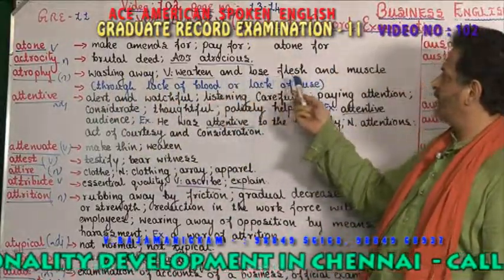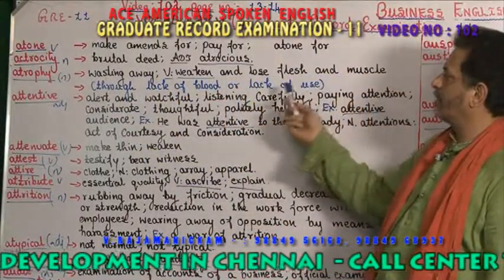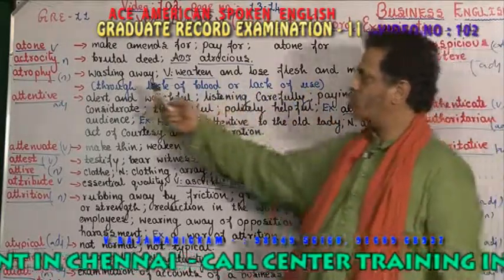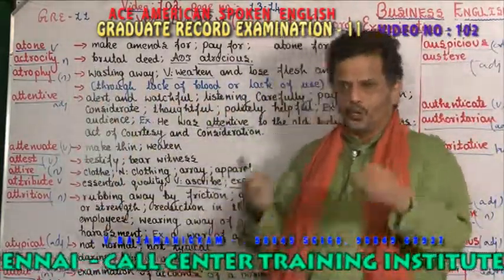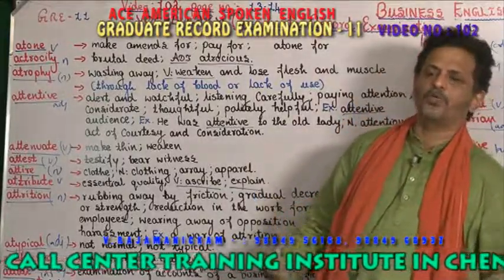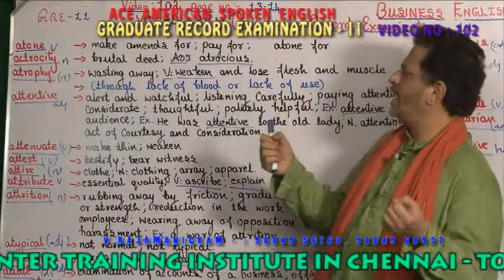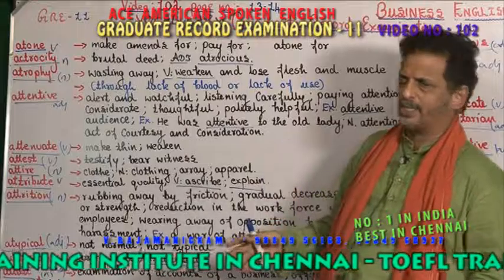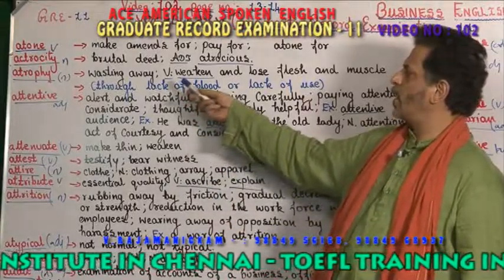'Atrophy' — it is a noun — means washing away, weakening, and losing flesh and muscle through lack of blood or lack of use. Atrophy means you are not taking any food, your body becomes very weak, and you are not doing any work at all.